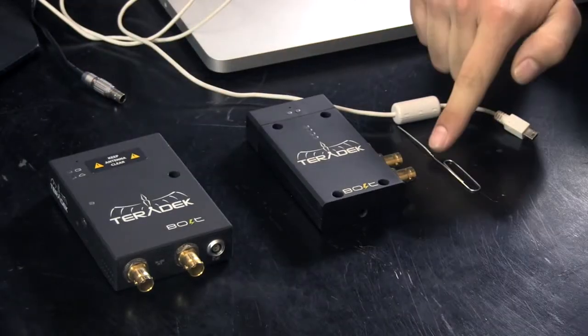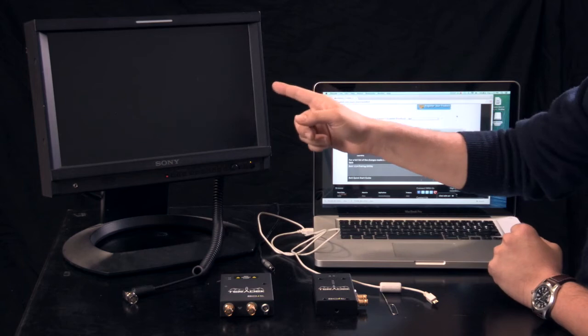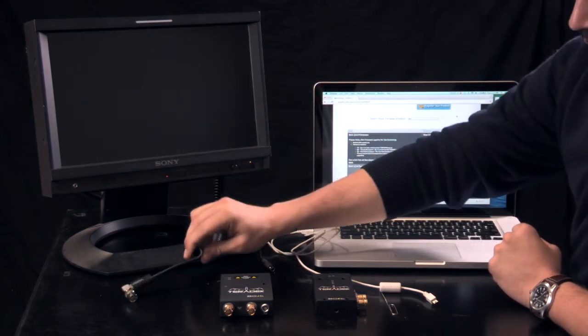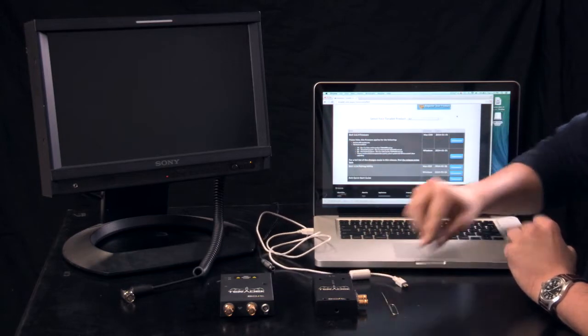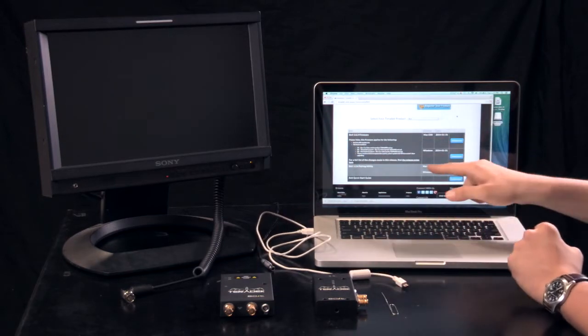Your Teradek bolts, a paper clip, a monitor and video cable for your receiver, power for your bolts, USB to mini USB cable, and a computer with a pairing utility.